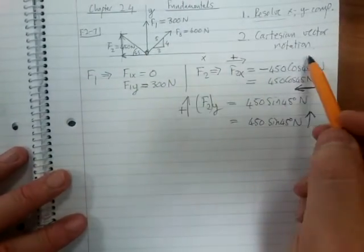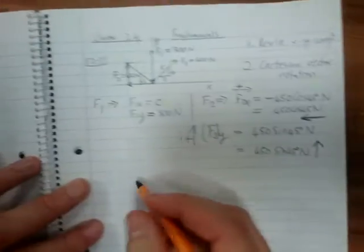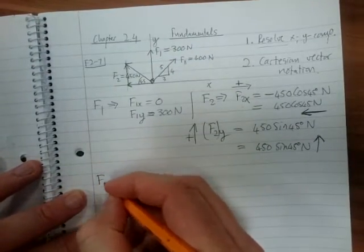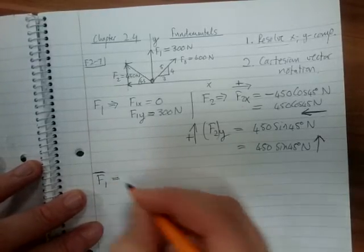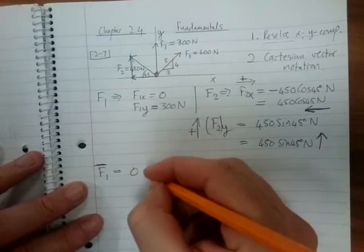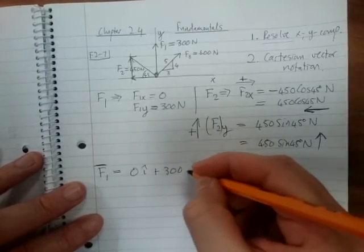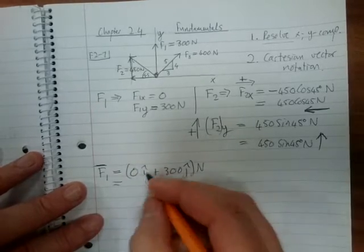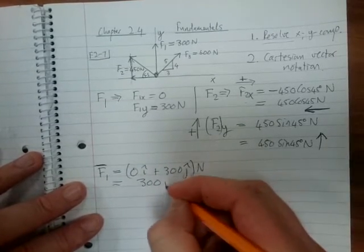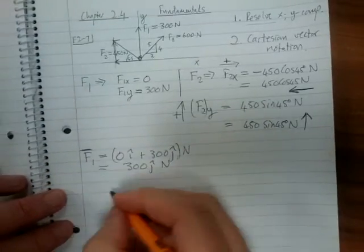Now I would like to write each one of these in Cartesian vector notation. Let's have a look. F1 with a bar on the top would then equal—I'm going to write there's zero in the I plus 300 J Newton, which is then simply 300 J Newton.